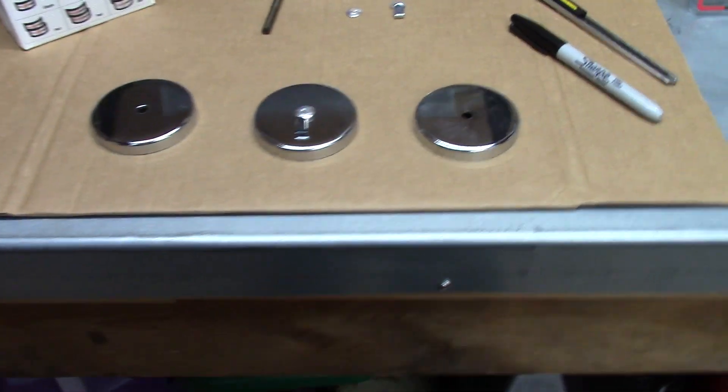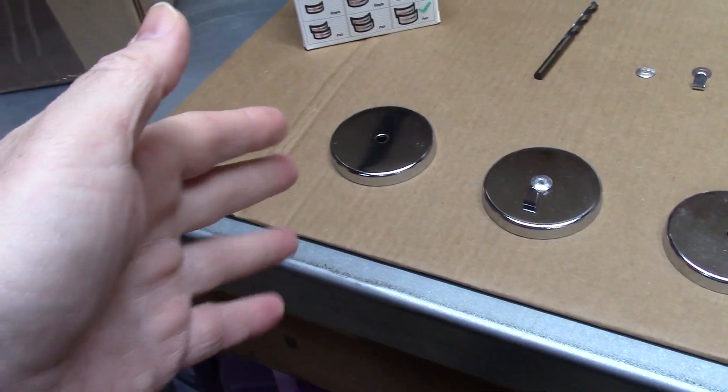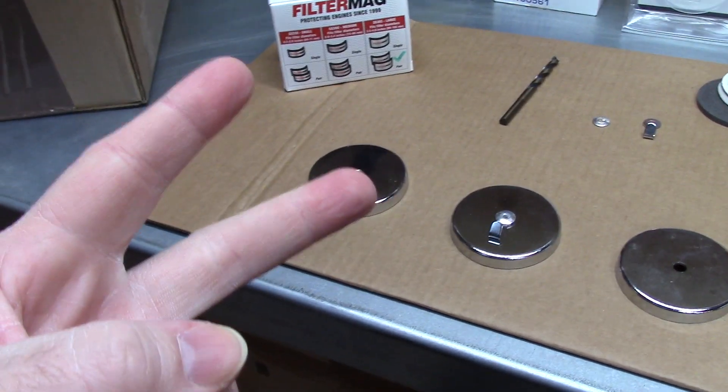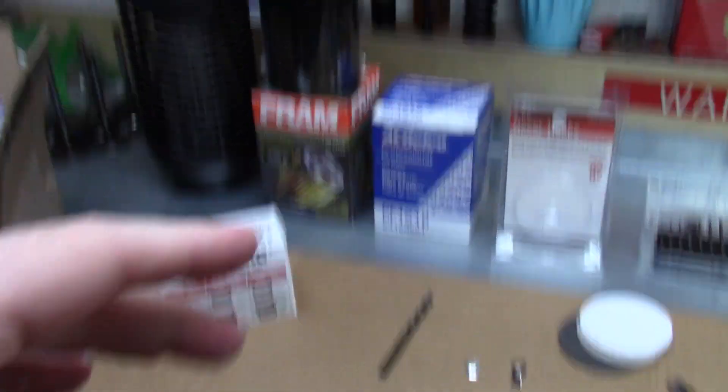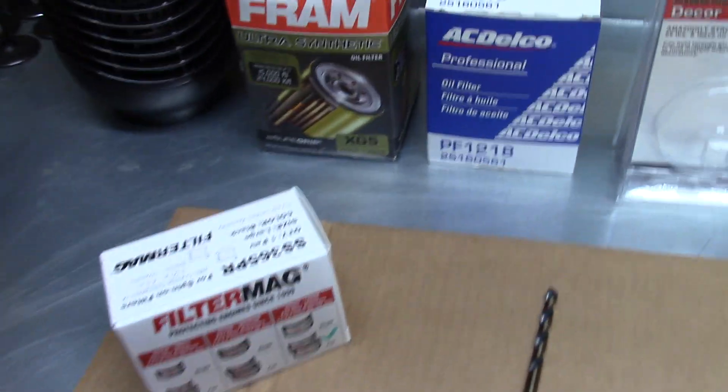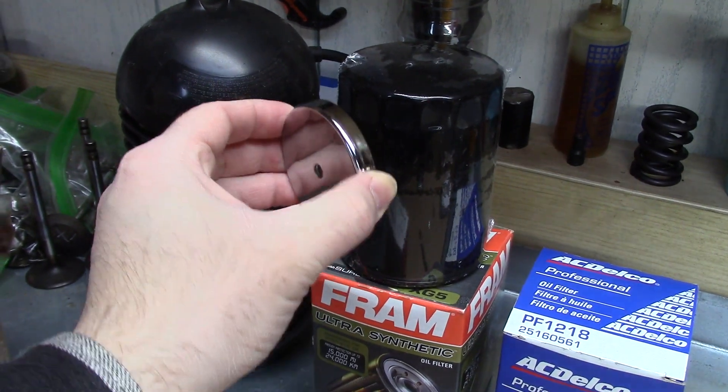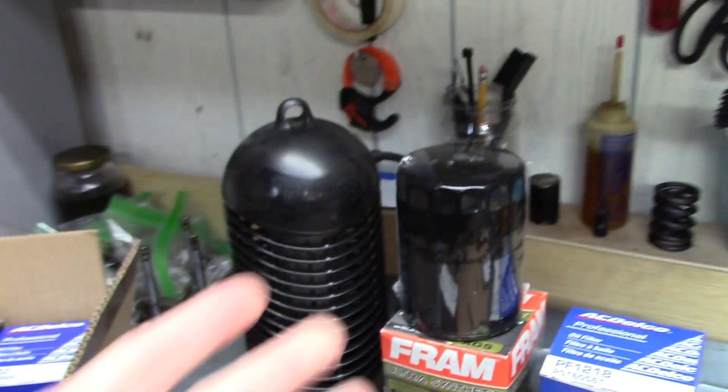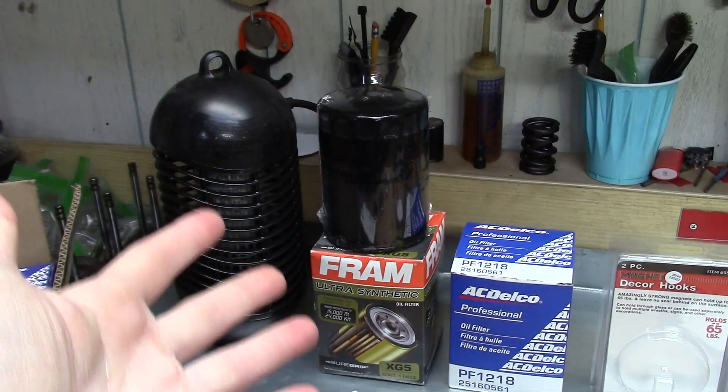Some people pointed out that they like to use speaker magnets, which are also round, but they would have to tape them. I've read two different times people talk about duct taping the magnet to the oil filter housing, and the reason they had to duct tape it on there is because once it got hot the magnet would fall off.